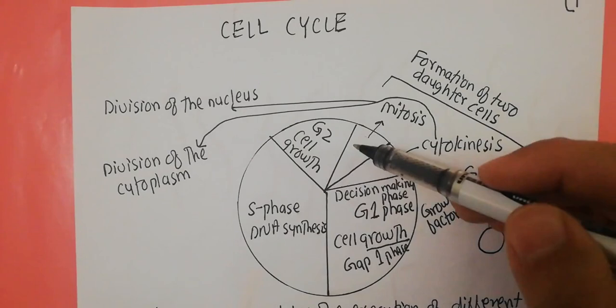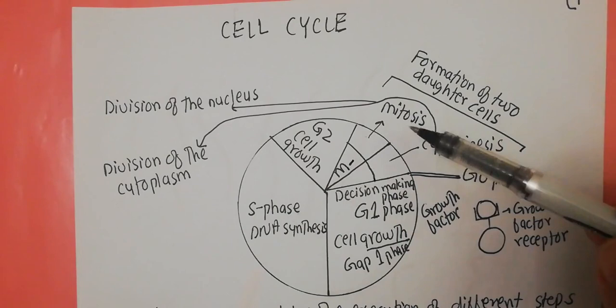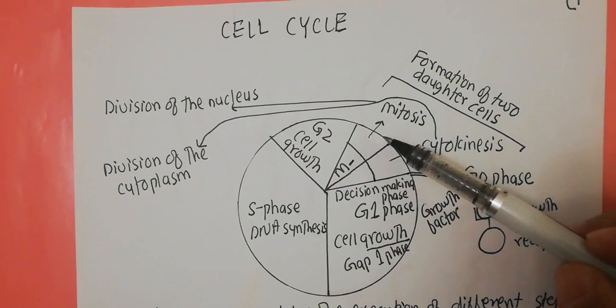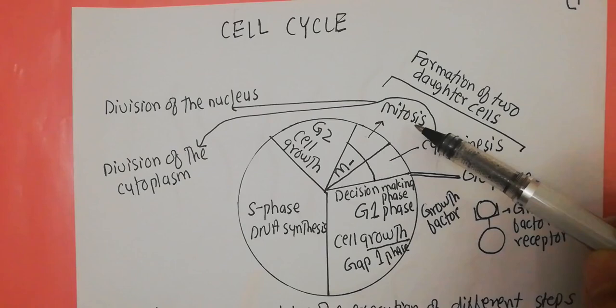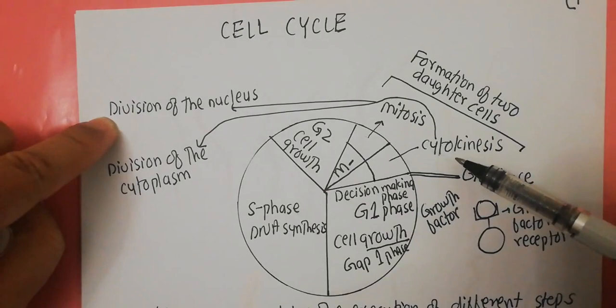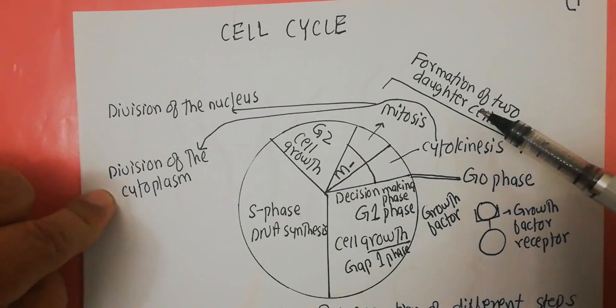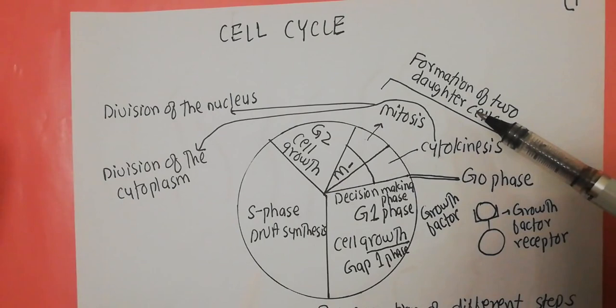The M phase of the cell cycle is divided into two sub-portions. The first is called mitosis, which strictly speaking refers to the division of the nucleus. The second is called cytokinesis, which is the division of the cytoplasm. After mitosis divides the nucleus, cytokinesis divides the one cell into two daughter cells. This is an overview of the cell cycle — the phases and the activities that take place.